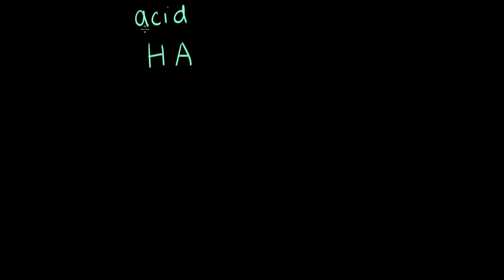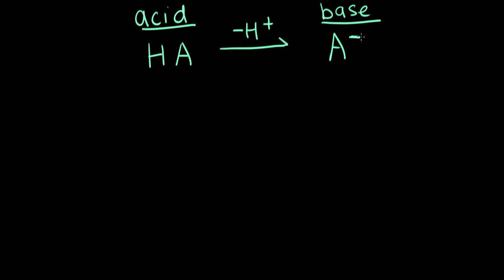The relationship between conjugate acid-base pairs can be written more generally. If we represent any generic acid as HA, an acid donates a proton — it loses the proton and forms the conjugate base, represented by A⁻. In the reverse reaction, our base A⁻ can gain a proton and remake our acid, or conjugate acid. So whenever you have two species with basically the same formula except one has an H⁺ and one doesn't, you know you have a conjugate acid-base pair.